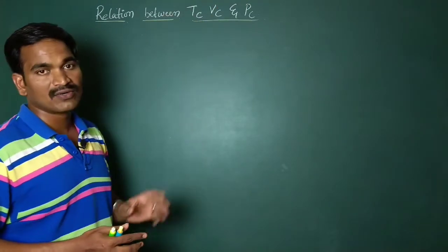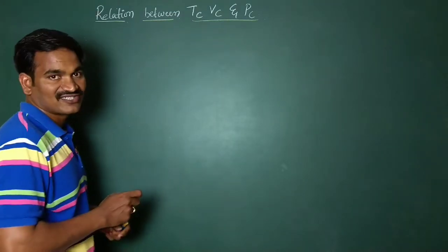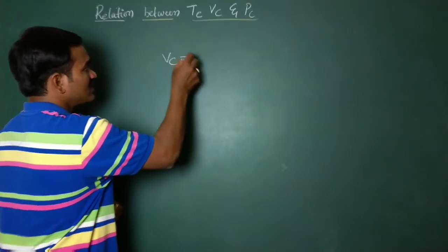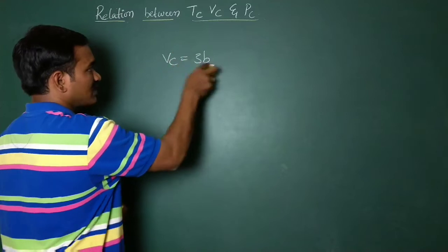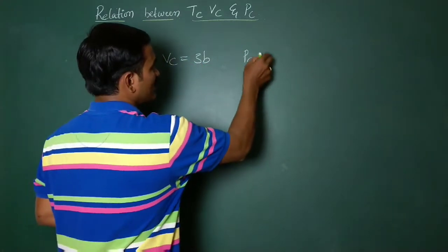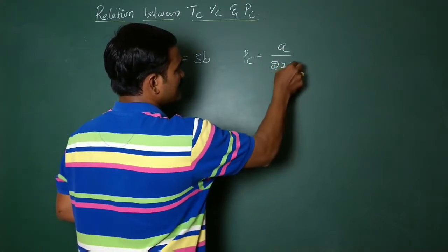If you want to know about this relation, you should remember the formulas of the critical constants. So first I will write the critical constant formulas. We have to take Vc equals 3B, that is critical volume formula. And next one, Pc equals A by 27B square.